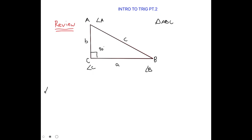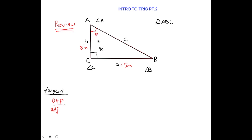We also learned the tangent ratio, where the tangent ratio is opposite over adjacent. So for example, let's say A is equal to 5 inches and B is equal to 8 inches. What is angle A? So we have to solve for this unknown angle — let's name this theta. So at the moment we have tan theta equals opposite side over adjacent side, so we have 5 over 8.